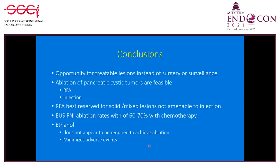In conclusion, cysts not necessarily requiring surgery are potentially amenable to treatment with cyst ablation, offering patients the option of treatment instead of surgery or surveillance. Ablation is feasible with either RFA or injection. At the current time, I recommend RFA only for solid or mixed lesions not amenable to injection, since we have more data supporting fine needle injection, but as more data becomes available about RFA this may change. We currently have ablation rates of 60 to 70 percent with gemcitabine and paclitaxel. We need more long-term data. Ethanol does not appear to be required and eliminating it does minimize the chance of serious adverse events. Thank you.